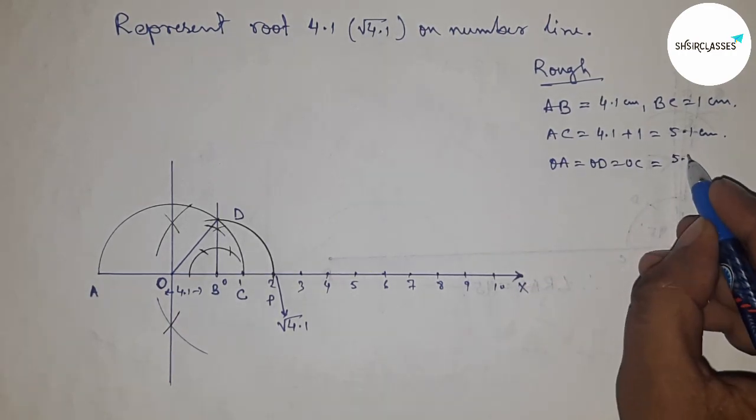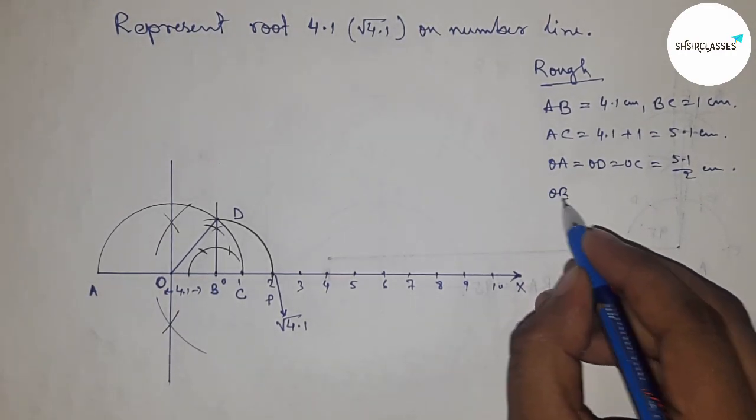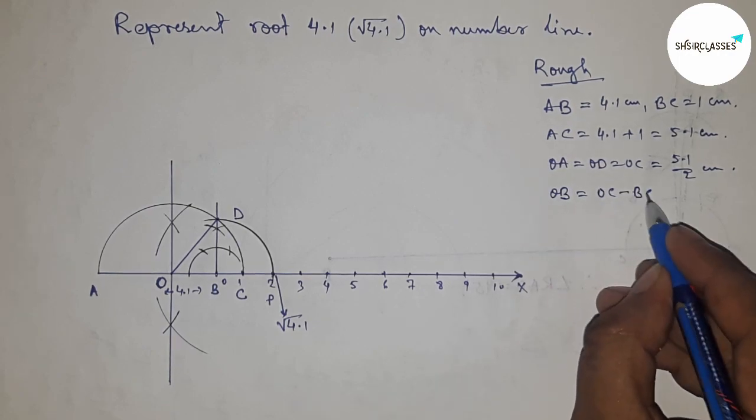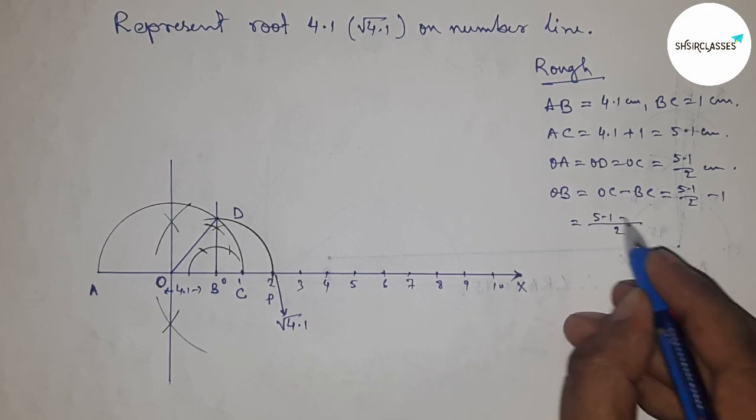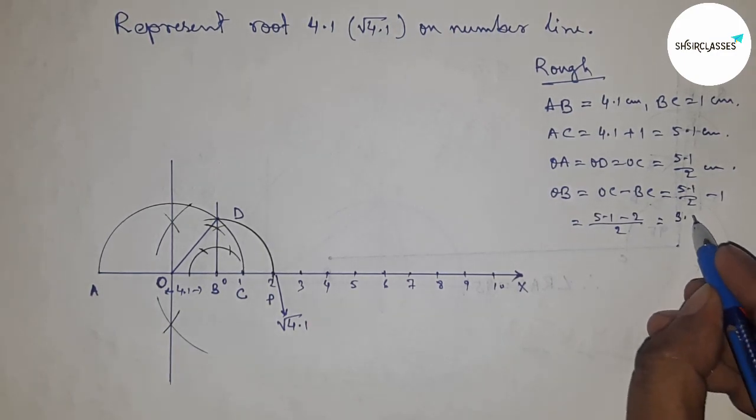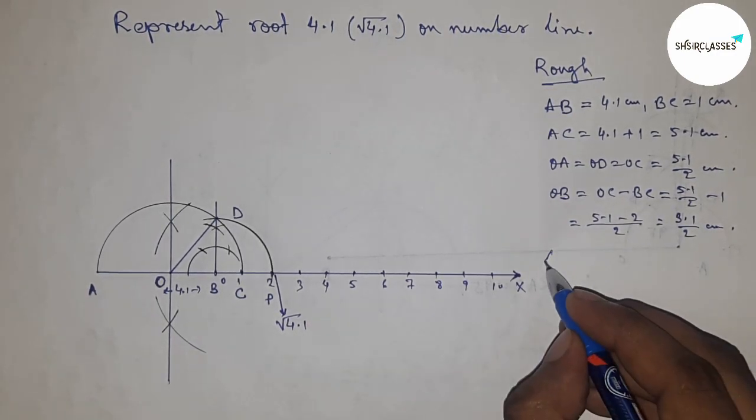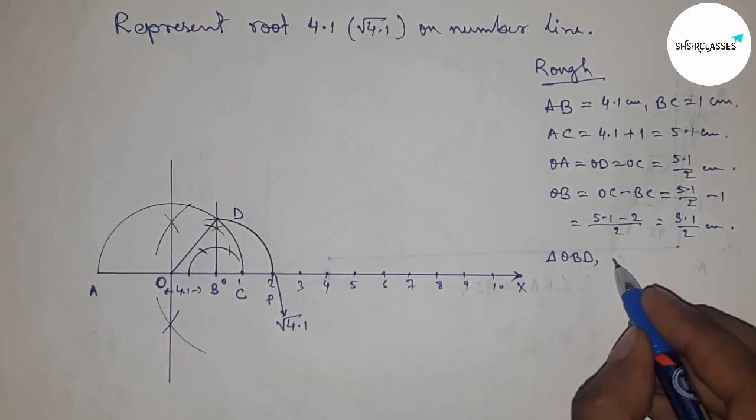Radius OA = OD = 5.1/2 cm. And OB = OC - BC. Putting the values of OC and BC and calculating, we get OB = 3.1/2 cm.